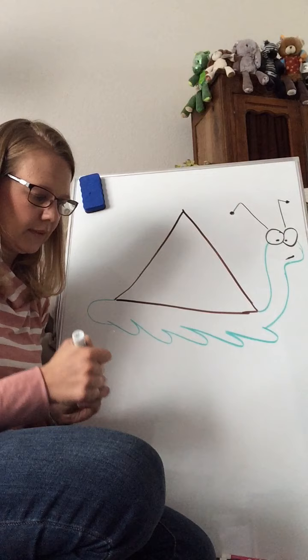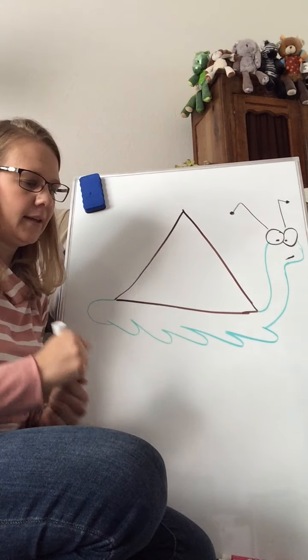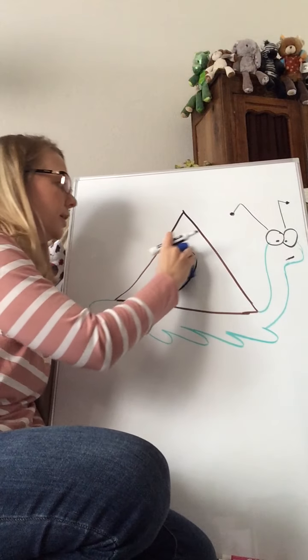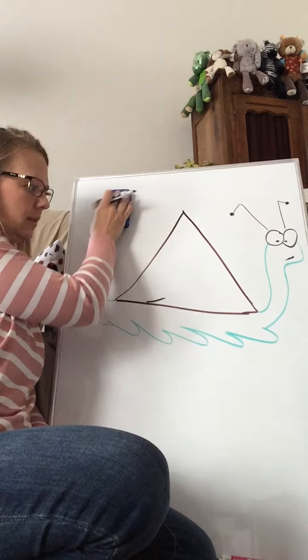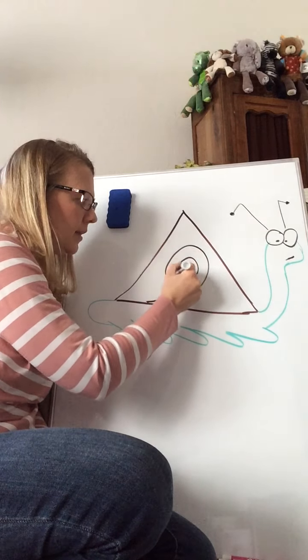Now I'm going to take my black again, and I'm going to draw my spiral through my snail shell. Oh, that's a bad start. So erase that and try that on again. So give me that spiral.